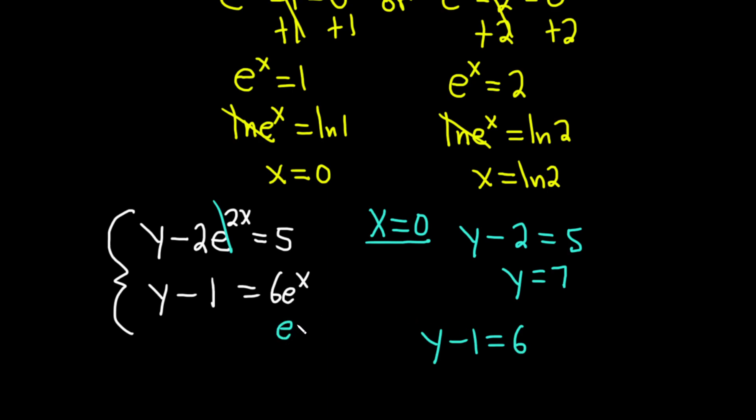We get y minus 1 equals 6, again, because e to the 0 is 1. And so again, y equals 7. So in any case, when x is 0, y is 7. So our first solution to this system is the ordered pair 0, 7.